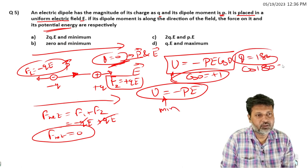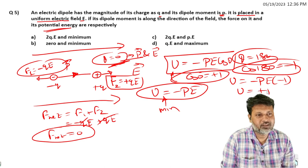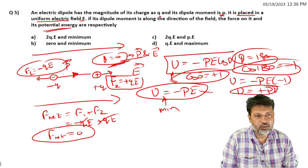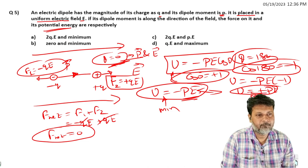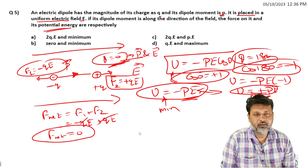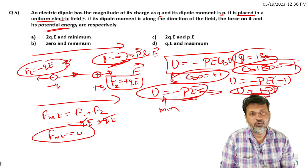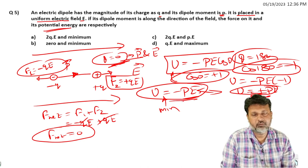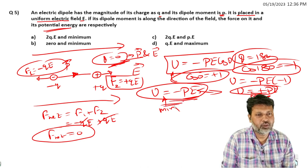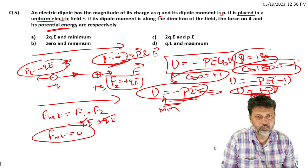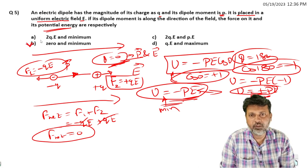Because if theta goes to 180 degrees, cos(180) = -1, giving U = -PE times -1 = +PE. So minimum is -PE and maximum is +PE. When the dipole is along the electric field direction, it has minimum potential energy. Looking at the options, the correct option is net force zero and potential energy minimum.